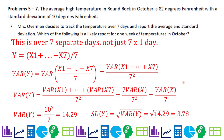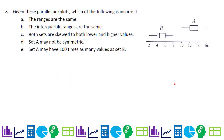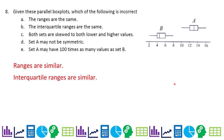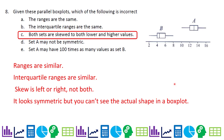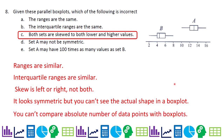Problem 8: given parallel box plots, which statement is incorrect? The ranges look similar, the interquartile ranges look similar. The answer is C: 'both sets are skewed to both lower and higher values' — skew is left or right, not both directions simultaneously. A symmetric distribution is not described as skewed both ways.